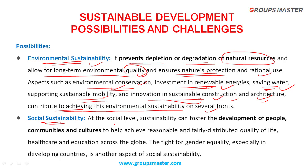Next is Social Sustainability. At the social level, sustainability can foster the development of people, communities, and cultures. The main aim is to achieve a reasonable and fairly distributed quality of life, including quality of education and healthcare. Social sustainability mainly fights for gender equality, especially in developing countries.